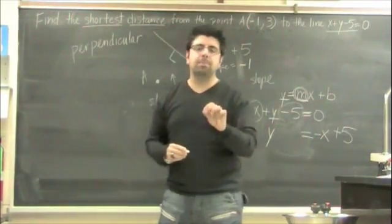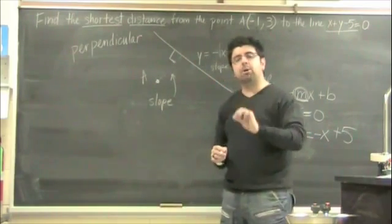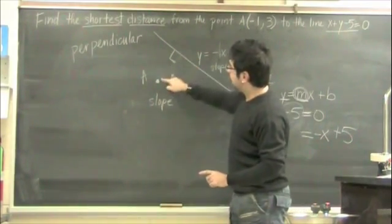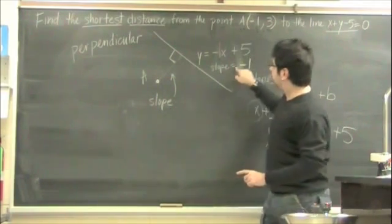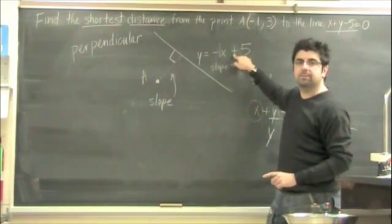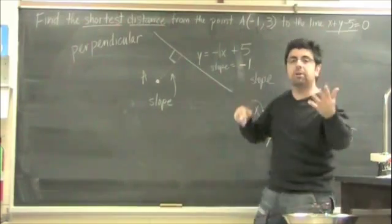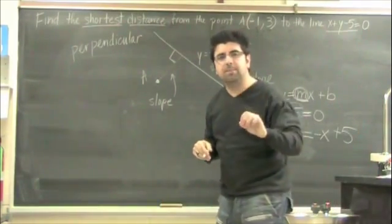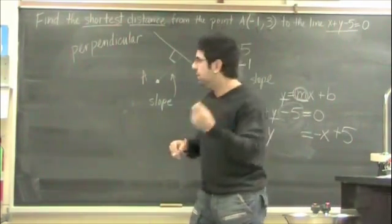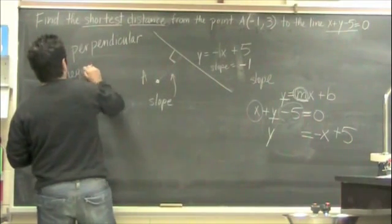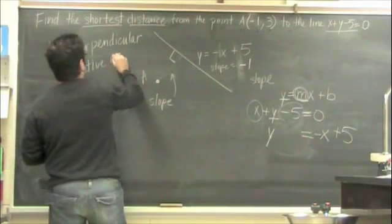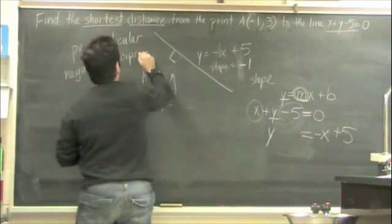In terms of perpendicular, whenever we have a perpendicular slope, this line is going to have a slope that is perpendicular to this original equation. To find the perpendicular slope, we know that we do something called a negative reciprocal.